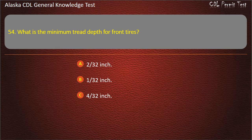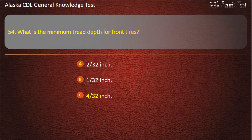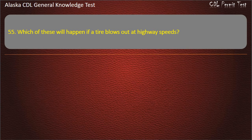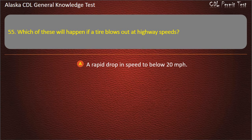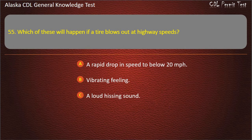Question 55. Which of these will happen if a tire blows out at highway speeds? A rapid drop in speed to below 20 miles per hour, a vibrating feeling, or a loud hissing sound. Answer: Vibrating feeling.